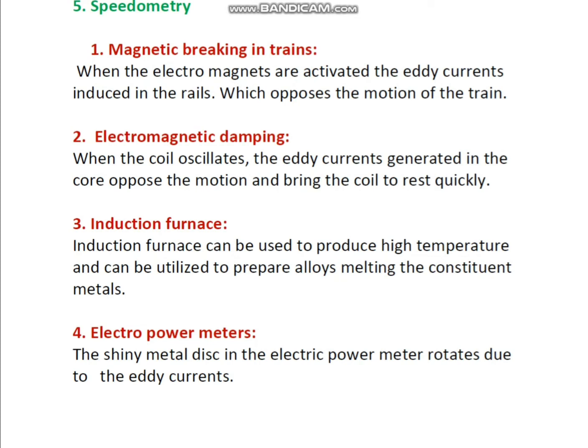So these are the main advantages of eddy currents: first, magnetic braking in trains; second, electromagnetic damping; third, induction furnace; and fourth, electric power meter. We can write any two with explanation of the four headings.